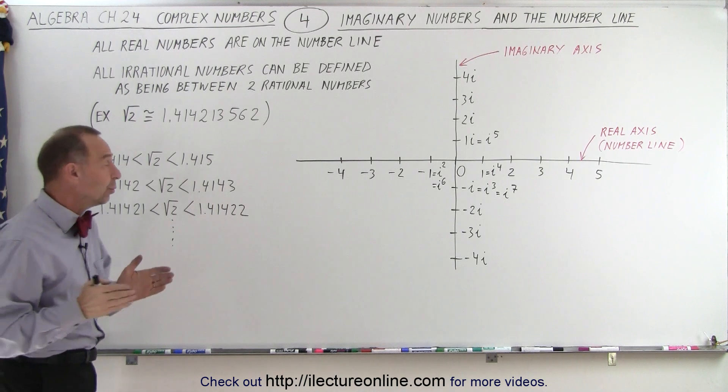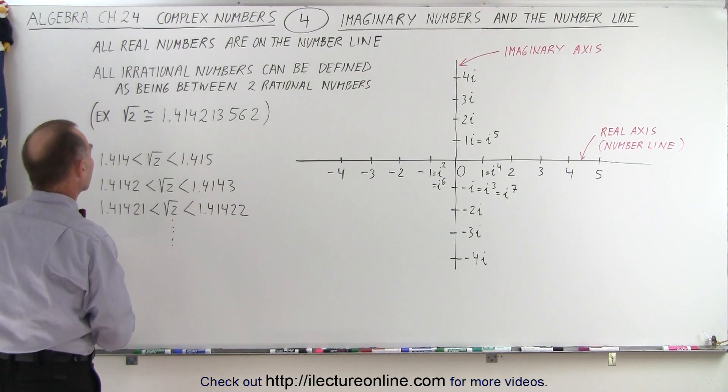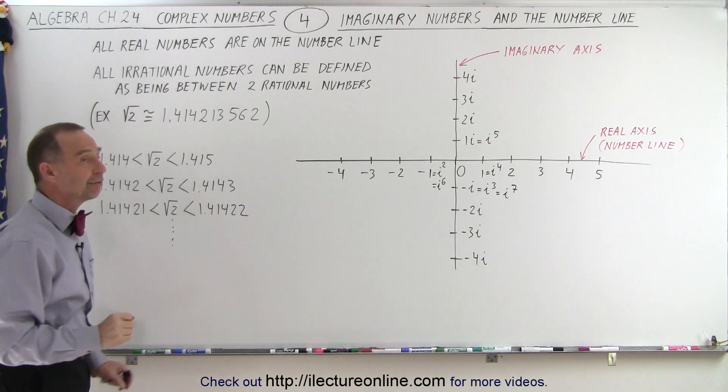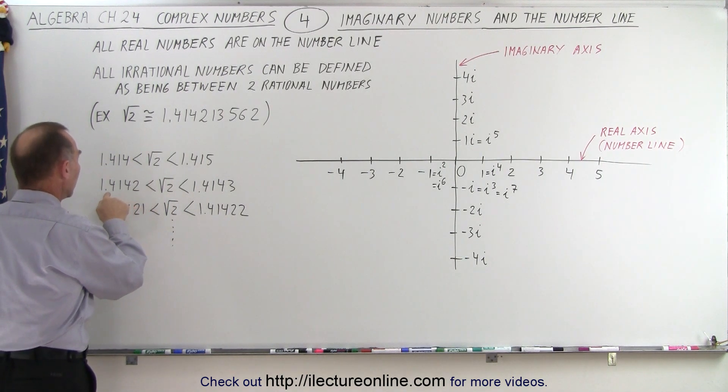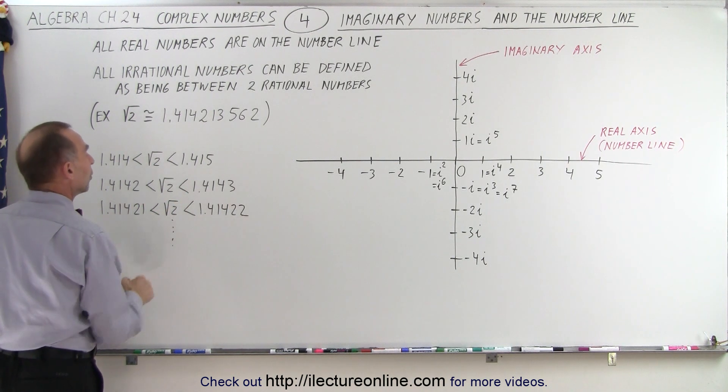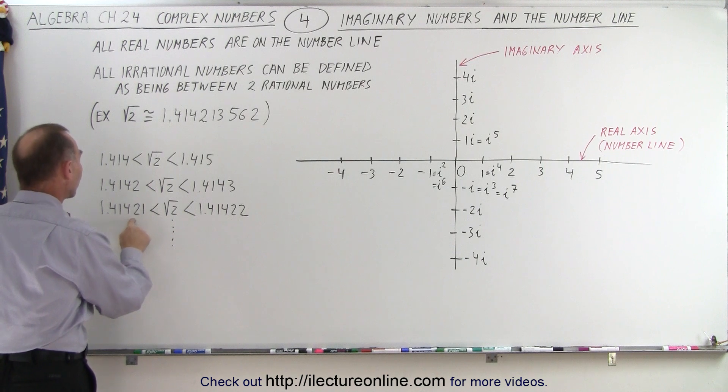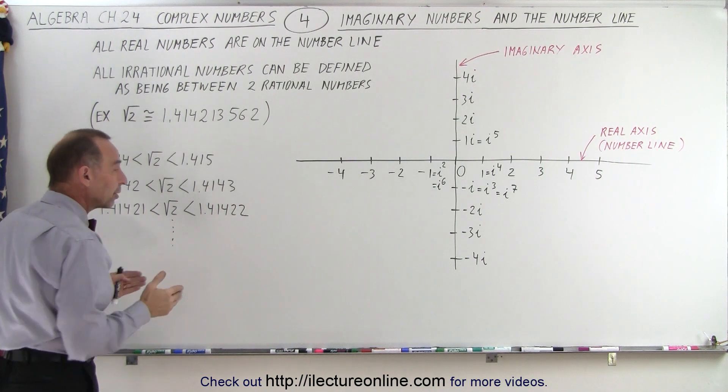So what we can do is we can define the square root of 2 as being between two rational numbers. We know that the square root of 2 is between 1.414 and 1.415. If you want to be a little bit more accurate, we can say that the square root of 2 is between 1.4142 and 1.4143. Or we can say that the square root of 2 is between 1.41421 and 1.41422. And we can just get it more and more accurate.